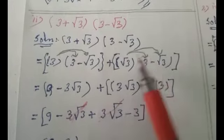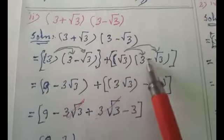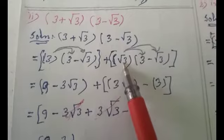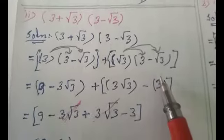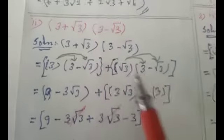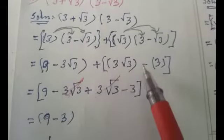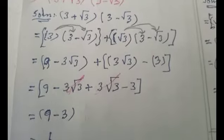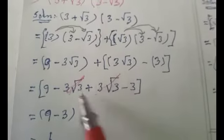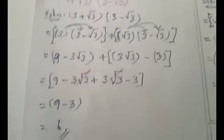Next, √3 × 3 = 3√3, and √3 × (−√3): since plus times minus is minus, and √3 × √3 = 3 (because √a × √a = a), this gives −3. Combining: 9 − 3√3 + 3√3 − 3. The terms −3√3 and +3√3 cancel, leaving 9 − 3 = 6, which is the final answer.